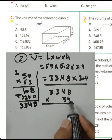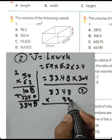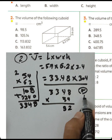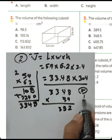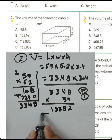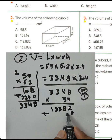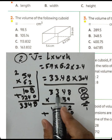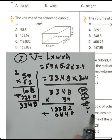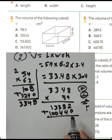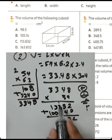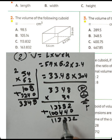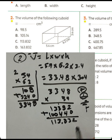Multiplying 3348 by 34: 4 times 8 equals 32 (write 2 carry 3), 4 times 4 is 16 plus 3 equals 19 (write 9 carry 1), and continuing through all digits. Summing the rows and placing the decimal point after three places gives the result 113.832 cubic centimeters.